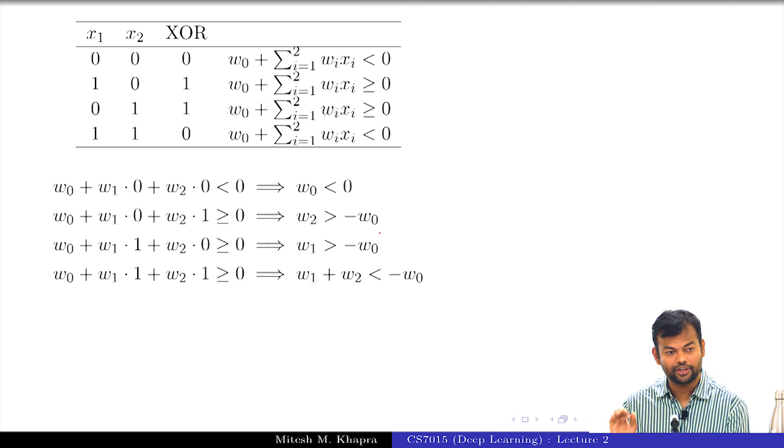Just looking at this can you tell me can you find a configuration for W naught, W 1, W 2 such that these inequalities can be satisfied together? No, right. Because 2 and 3 want you to be greater than minus 1 minus W naught and when you take addition of that it has to be less than minus W naught. So, that is not going to happen right.